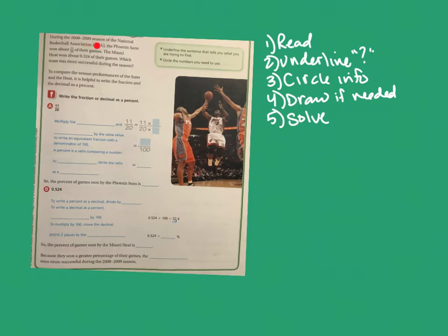During the 2008-2009 NBA season, the Phoenix Suns won 11 out of 20 of their games, and the Miami Heat won about 0.524 of their games. Which team was more successful? To compare the season performances, it's helpful to write the fraction and the decimal as a percent. Anytime you're comparing different amounts, people use percents because it evens the playing field.